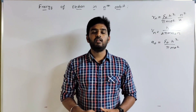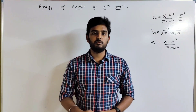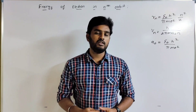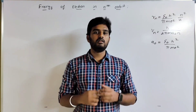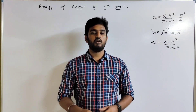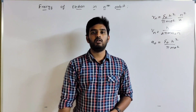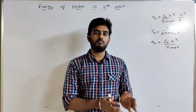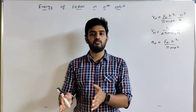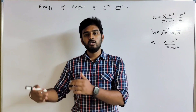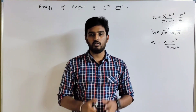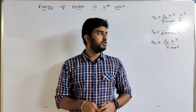Hi everyone! What is the concept of the energy of the electron in the nth orbit? If we look at the Bohr atom model, we can find the orbital velocity and we can find the energy of the electron in the nth orbit.